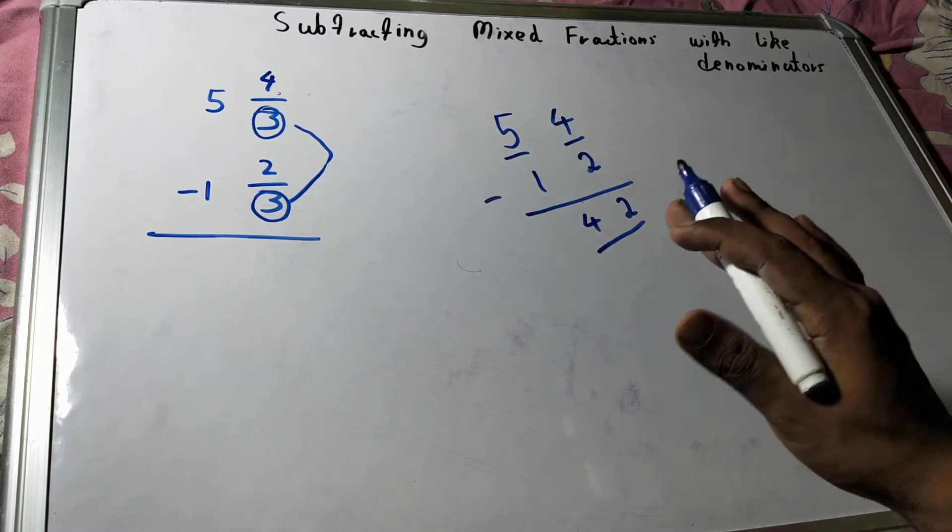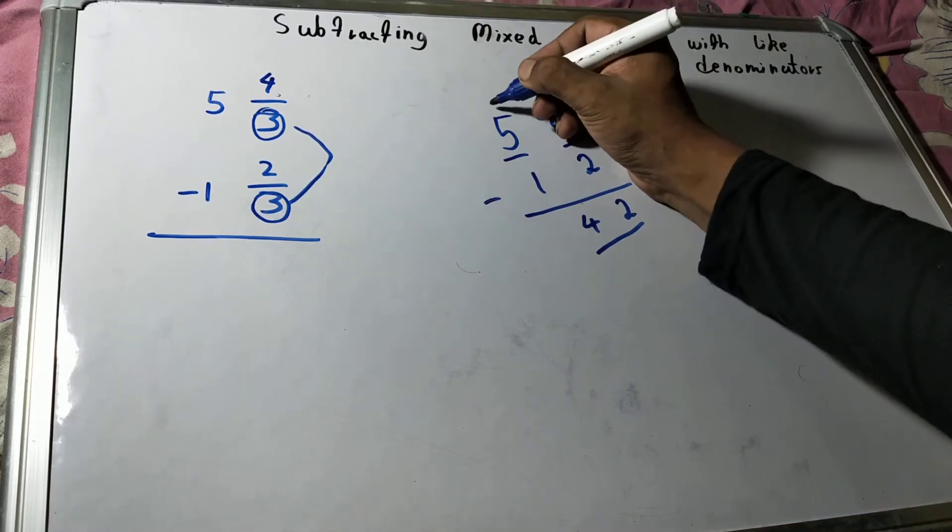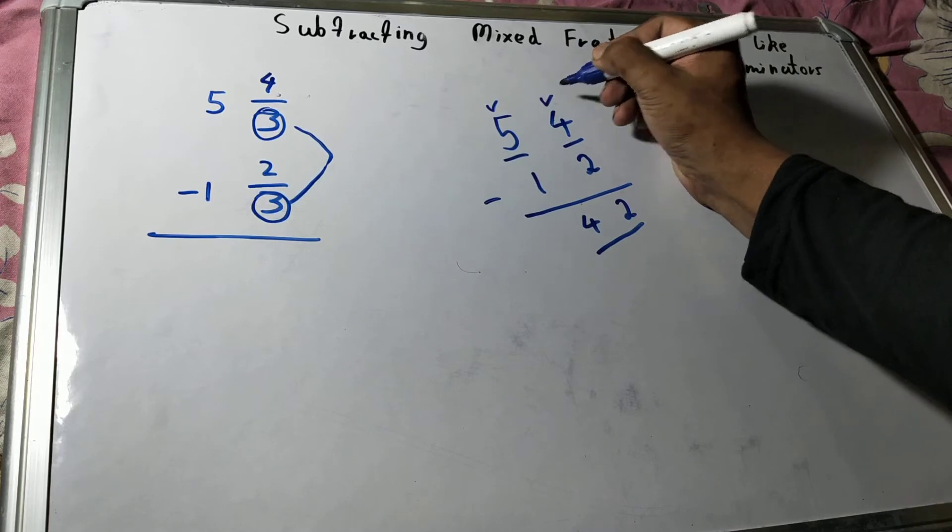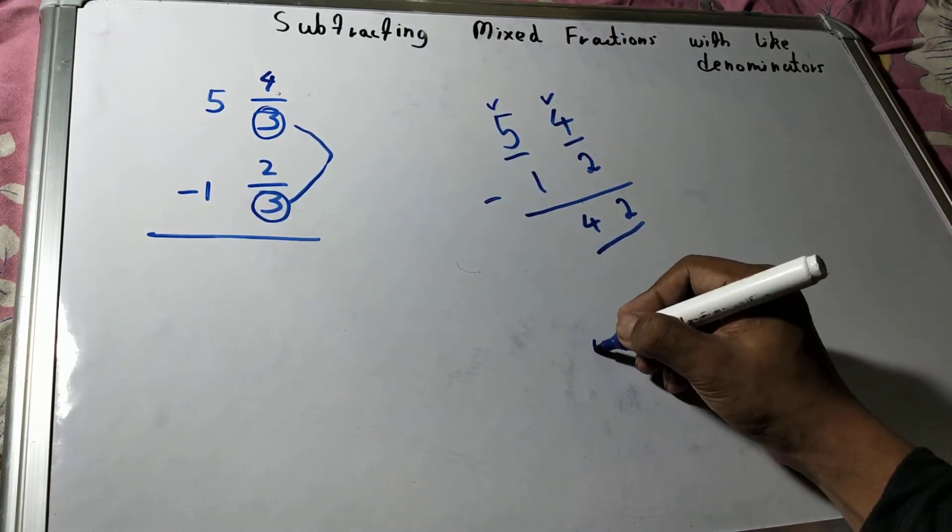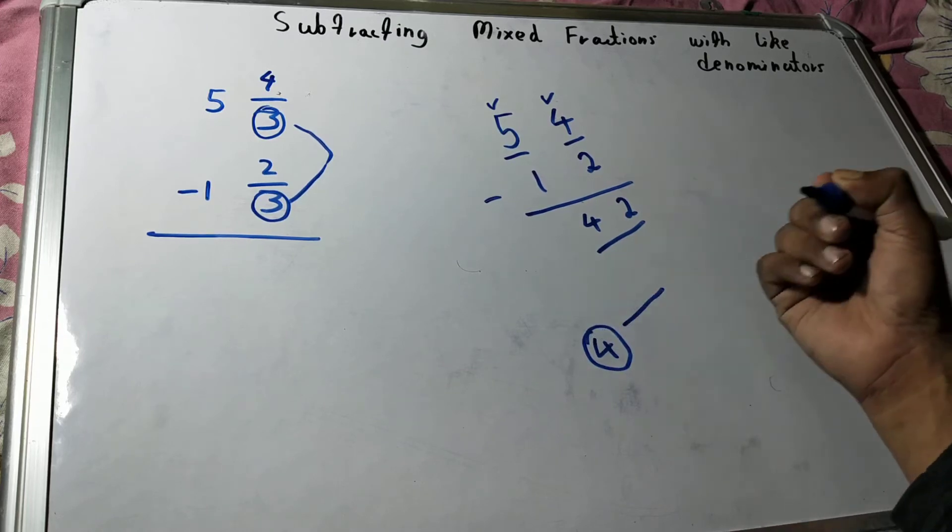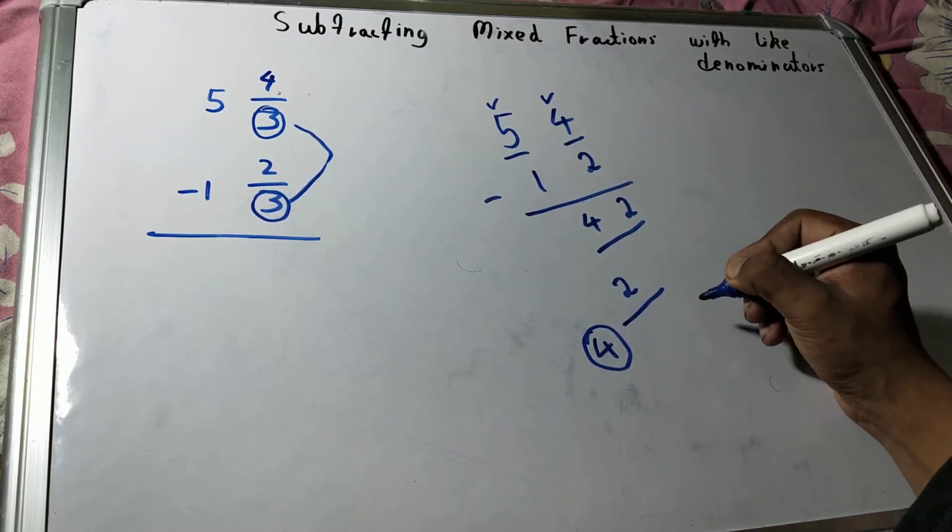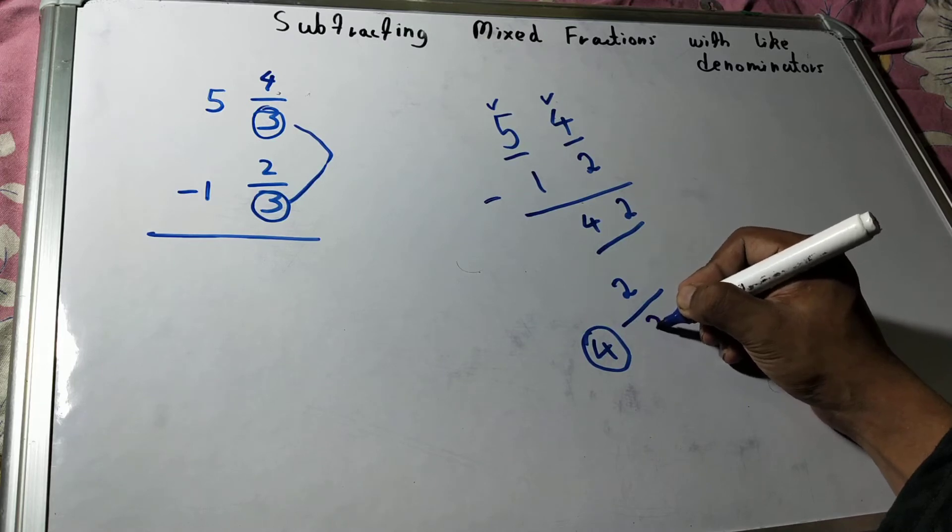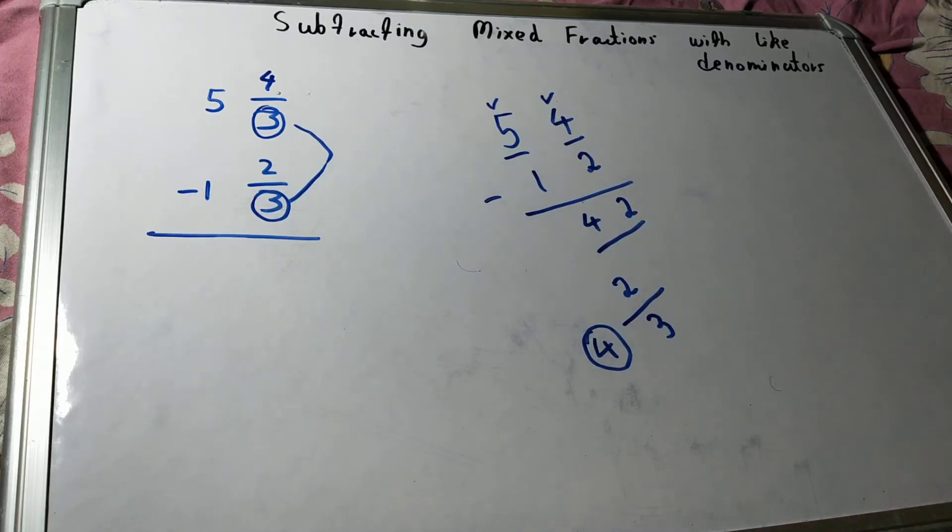So I guess you remember the places. This was for the whole part and this was for the numerator part. So place it like that in a mixed fraction. 4 is for the whole part and 2 is for the numerator part, and in the denominator our denominator will be the same as earlier, that is 3. And that will be your answer.